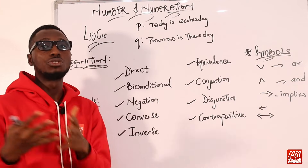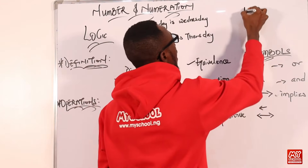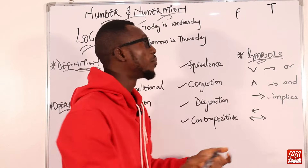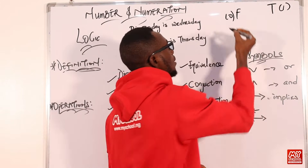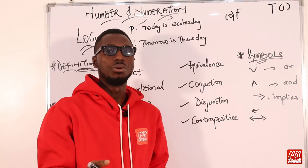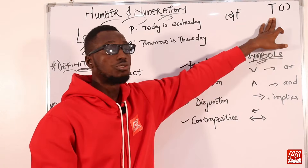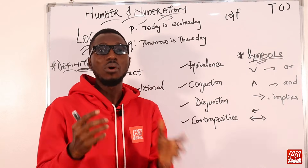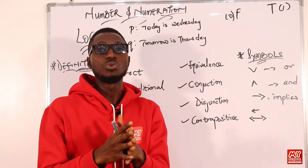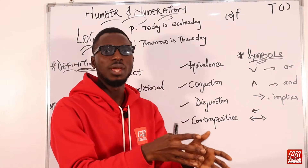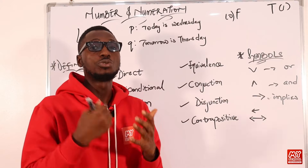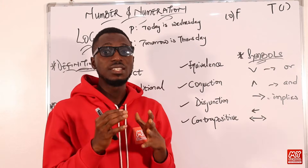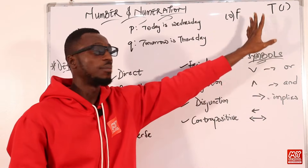The truth value can be false or true. When the truth value is false, you represent it with F. When the truth value is true, you represent it with T or C. We also give true the value 1 and false the value 0. For this video lesson, I am going to be using C for true and F for false, so I'll be using C and F throughout.